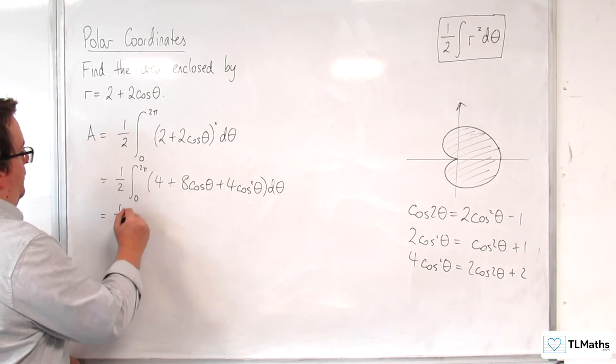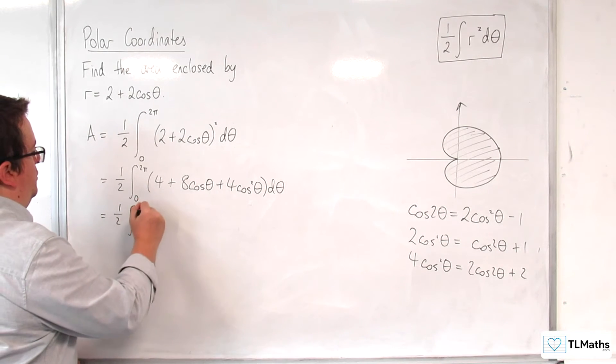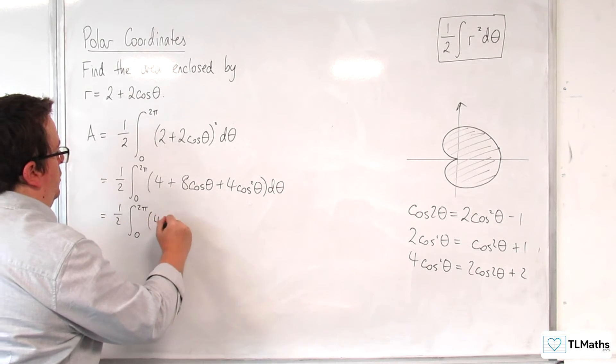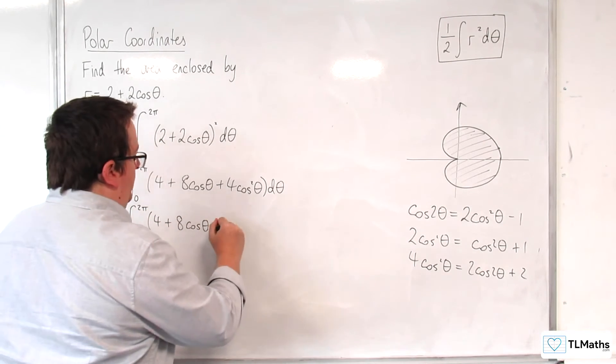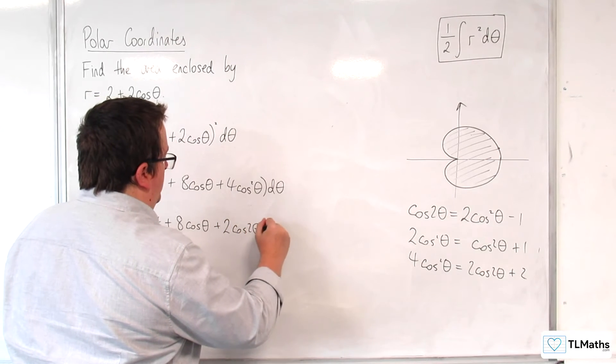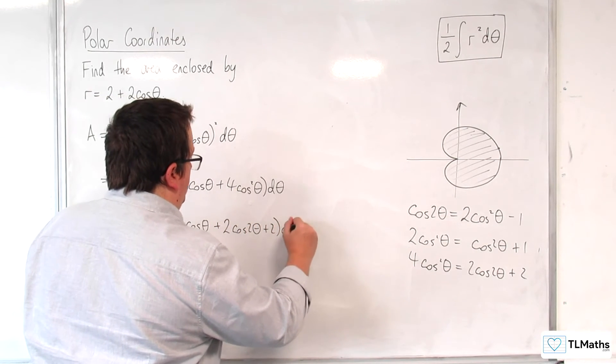So we have 1 half times the integral between 0 and 2 pi of 4 plus 8 cosine theta plus 2 cosine 2 theta plus 2 d theta.